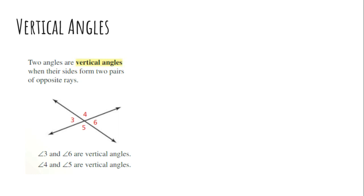Basically, they're on the opposite sides of this little intersection right here. That's how I think about it. And what's important about vertical angles and that you retain is vertical angles are congruent always.